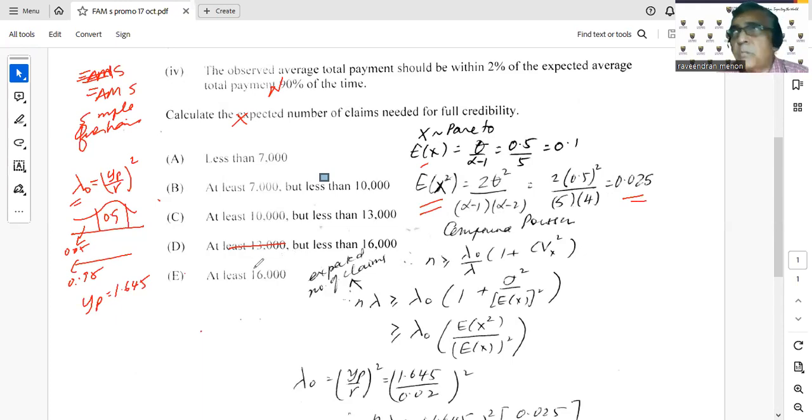Remember, we're dealing with total payment - an aggregate distribution, aggregate claims. We're looking at the number of claims, so we have compound Poisson. The formula is n >= lambda_0 * (1 + CV^2 of X).